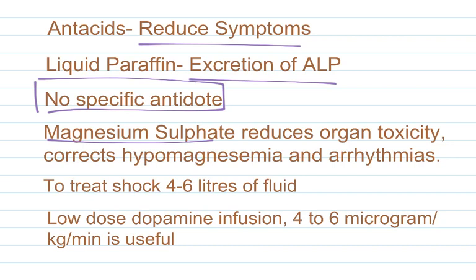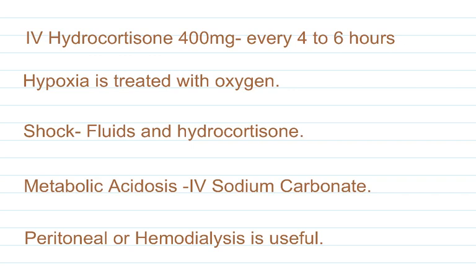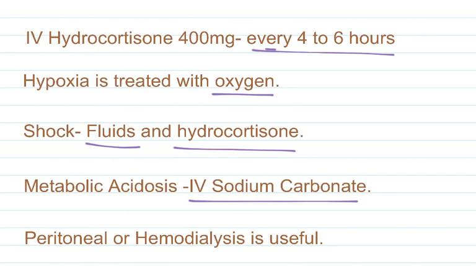Magnesium sulfate reduces organ toxicity, corrects hypomagnesemia and arrhythmias. To treat shock, 4-6 litres of fluid are to be administered during the first 3-6 hours. Low-dose dopamine infusion at 4-6 micrograms per kg per minute is useful. IV hydrocortisone 400 mg should be administered every 4-6 hours. Hypoxia is treated with oxygen, and metabolic acidosis is treated using IV sodium bicarbonate. Peritoneal or hemodialysis is also useful.